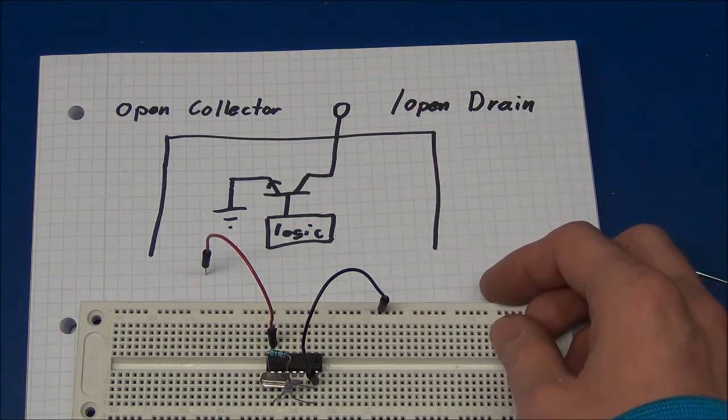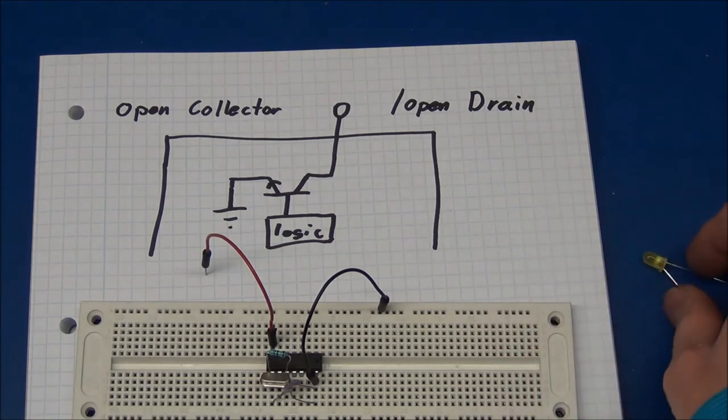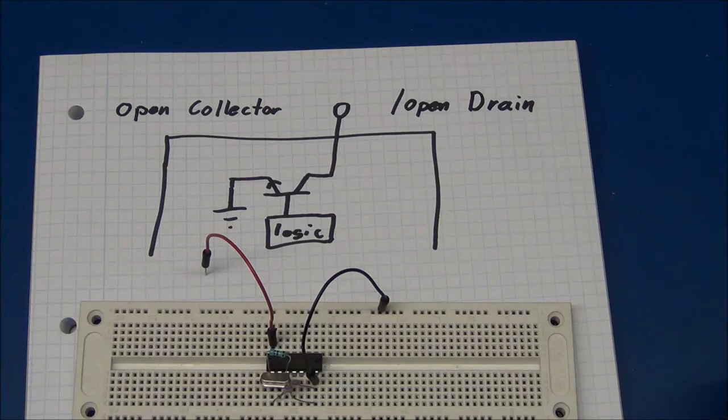So that's one thing to notice when you buy a chip. If you want to make LEDs light up or something else, you might want a push-pull configuration.